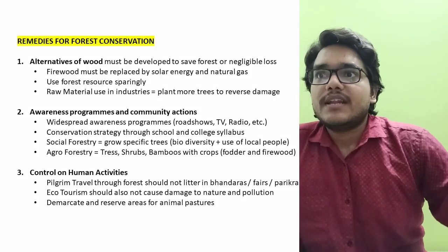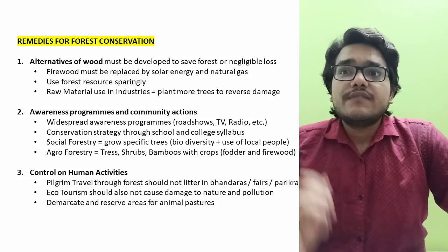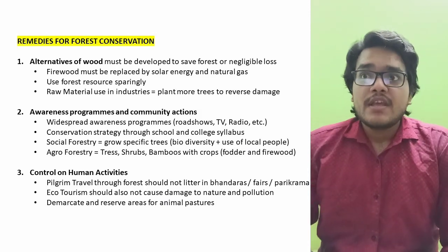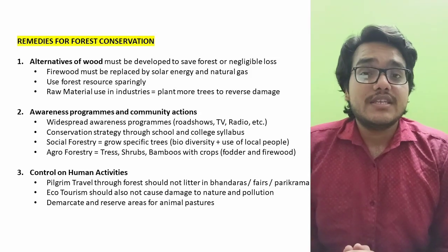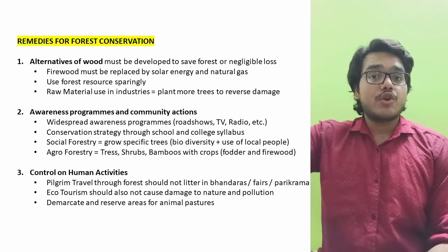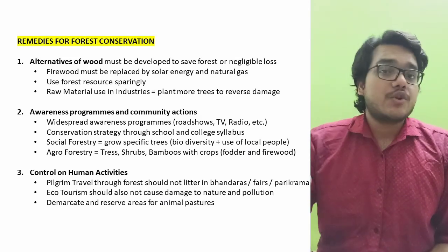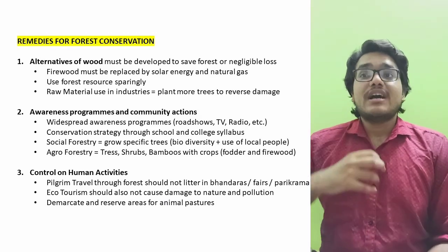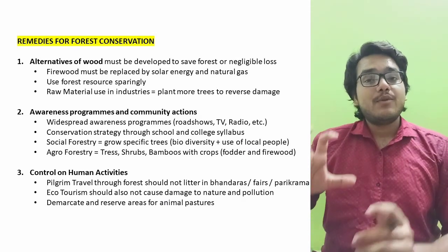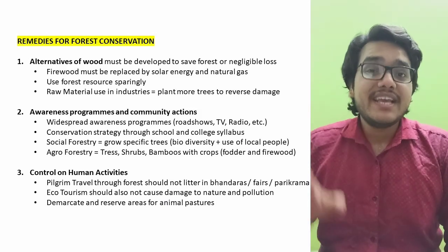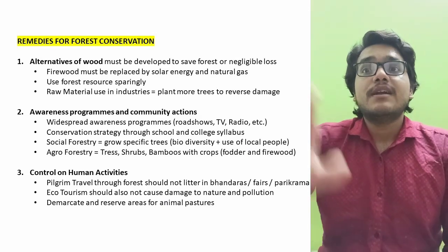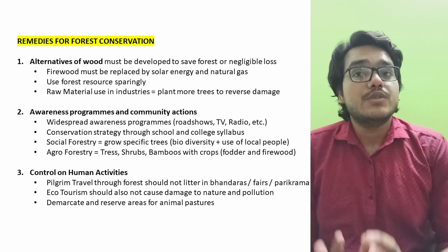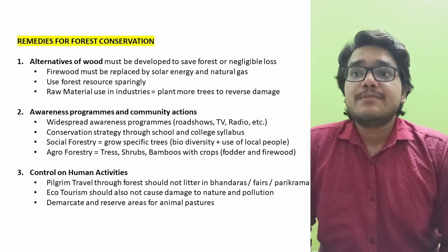When we talk about remedies for forest conservation, our first remedy is to find alternatives to wood. We should look at alternative sources of energy such as solar energy and natural gas to reduce dependence on firewood. We should also use forest resources as sparingly as possible and minimize the use of wood-based raw materials in industry. Where development plans have caused forest loss, compensate by planting more trees.